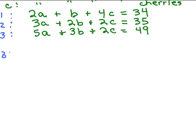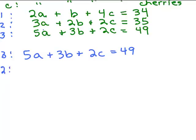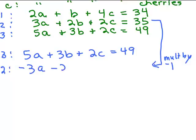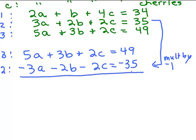I'm going to take equation 3 and copy it down: 5A + 3B + 2C = 49. And I'm going to take equation 2 and multiply by negative 1, which gives me −3A − 2B − 2C = −35. Adding those together gives 2A + B = 14. I've come up with a new equation, which I'm going to call equation 4.